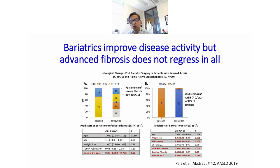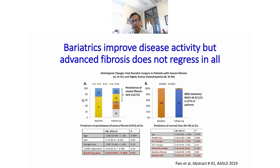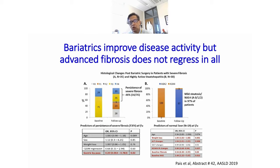From bariatric surgery, we know that disease activity improves, but advanced fibrosis — particularly in the population at risk of liver-related outcomes — frequently does not improve so much. After bariatric surgery, steatohepatitis resolves in a lot of people, but about 46% continued to have severe fibrosis. This again tells us that weight loss is not the only solution and cannot be used as an excuse to prevent drug therapy for our patients.